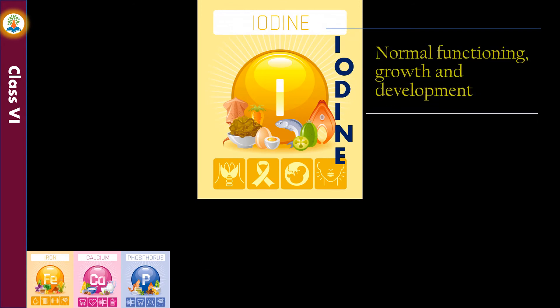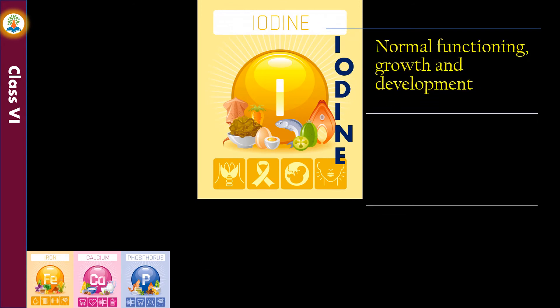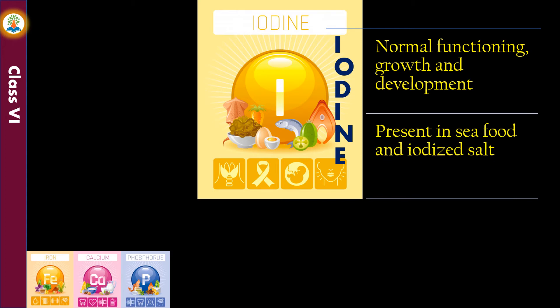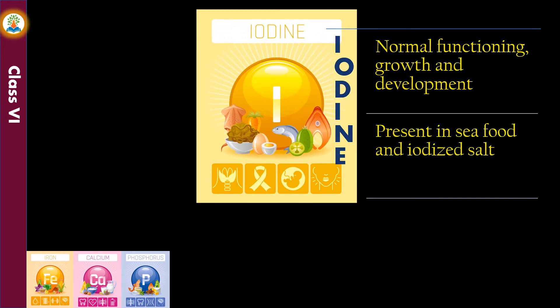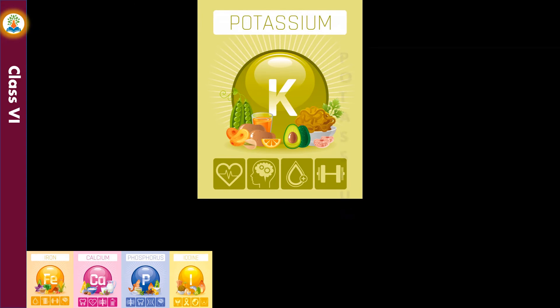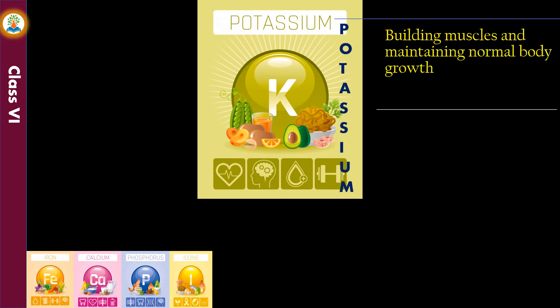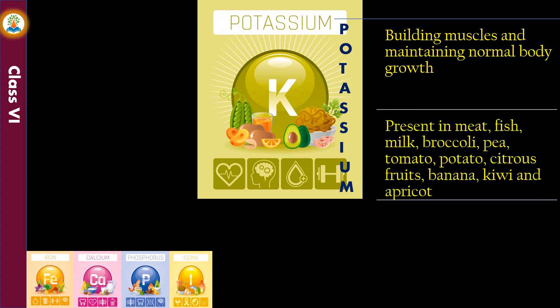Iodine is essential for normal functioning, growth, and development; it is present in seafood and iodized salt. Potassium is required for building muscles and maintaining normal body growth; it is present in meat, fish, milk, broccoli, pea, tomato, potato, citrus fruits, banana, kiwi, and apricot.